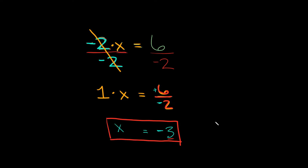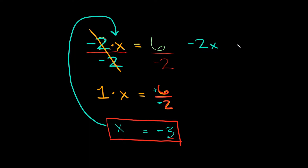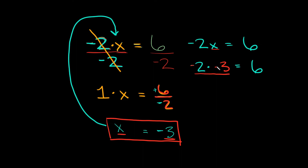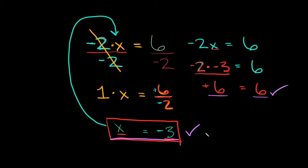Is this the correct answer? The only way to check is plugging our answer into the original equation. The original equation was negative 2x is equal to 6, and we got x equals negative 3. So we plug in negative 3: negative 2 times negative 3 is equal to 6. A negative times a negative is a positive, and 2 times 3 is 6, so we have positive 6 equals positive 6 — that's a true statement, so the answer is correct.